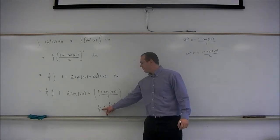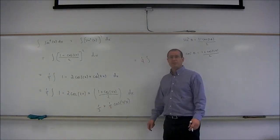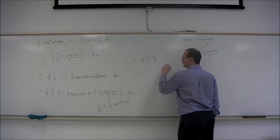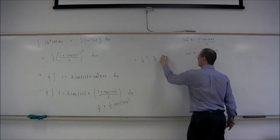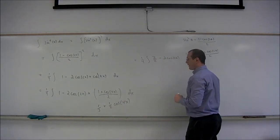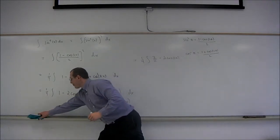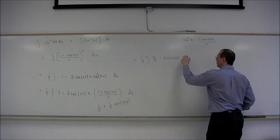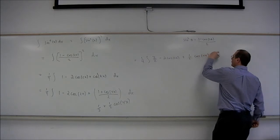And then the 1 half in the front, I can add to the 1. 1 plus 1 half is 3 halves. So I'm going to say 3 halves and then minus 2 cosine 2x and plus 1 half cosine of 4x dx.